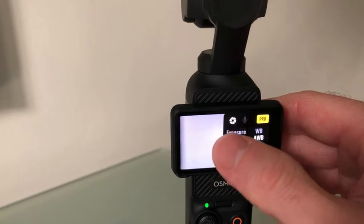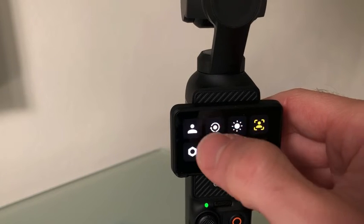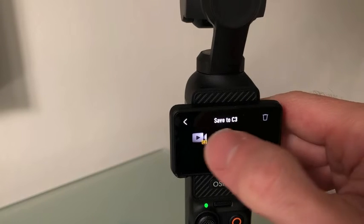Once you have set up your settings, let me tell you a new feature on the Pocket 3, and that is to set up a custom profile. Once you set everything up the way you like it, swipe down from the top, click on the little person icon on the top left, then choose to save in one of the custom preset slots.